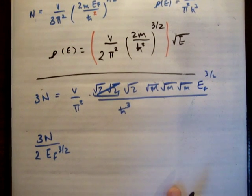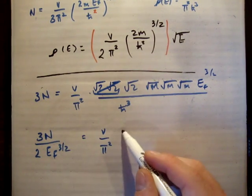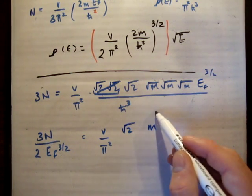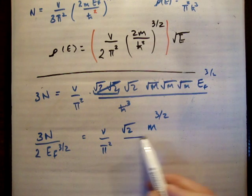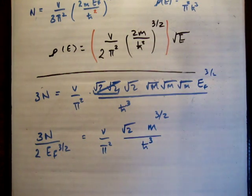I'm going to have left V over pi squared. I'm going to have root 2 times m to the 3 over 2, divided by h bar cubed. We'll say h bar cubed.